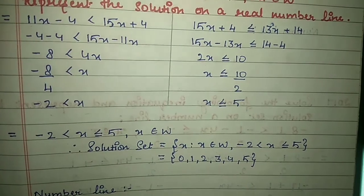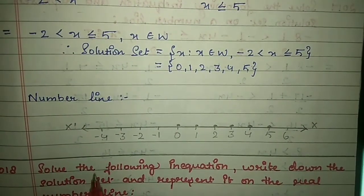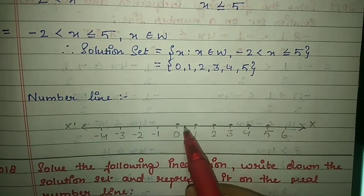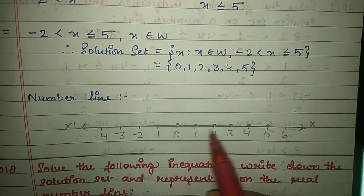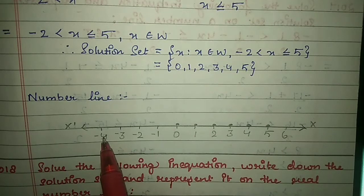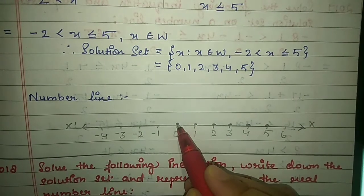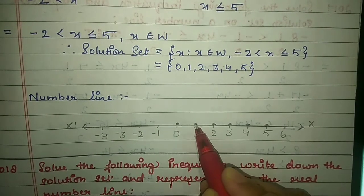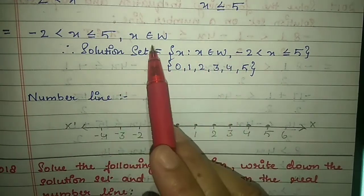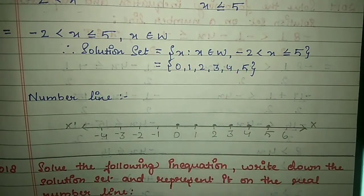Draw the number line with pencil and scale. Mark both side arrows. Mark 0, positive integers on the right, negative on the left. Mark these points with pencil. For whole numbers, mark the individual points rather than drawing a line.